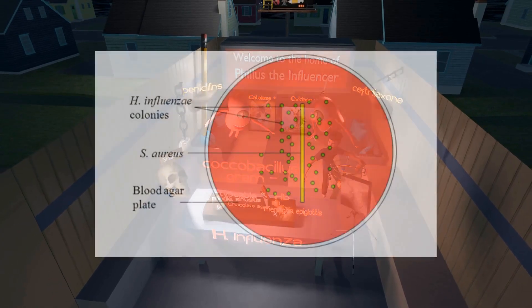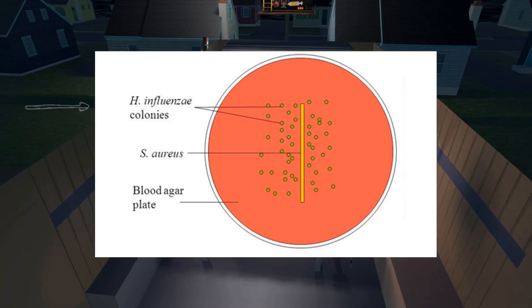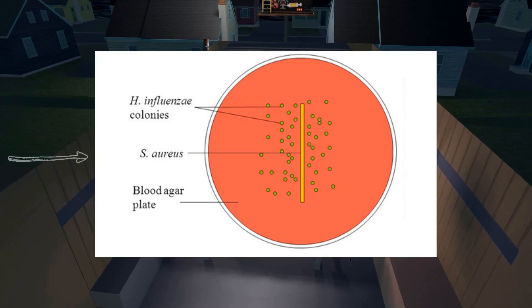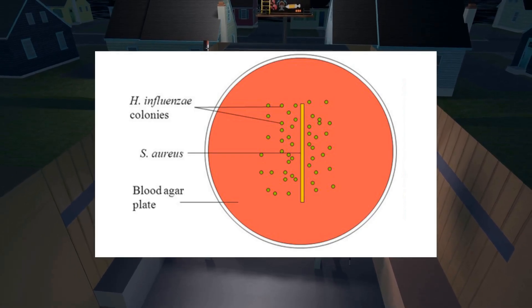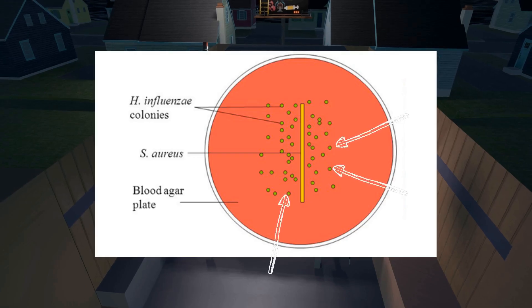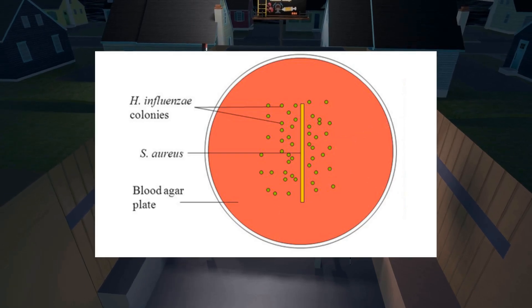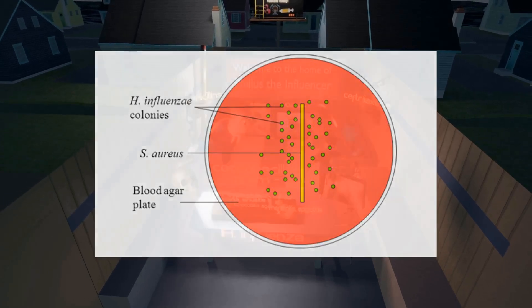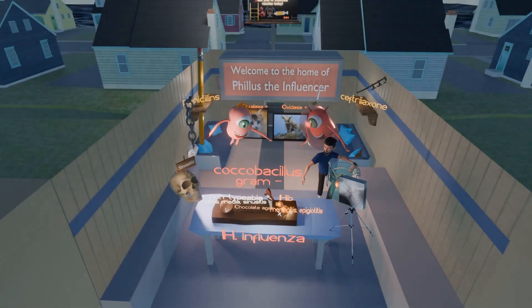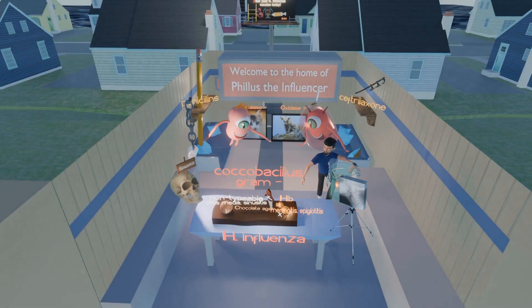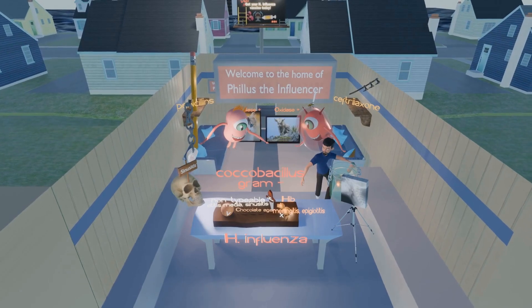Haemophilus influenzae could potentially grow on sheep blood agar by cross-streaking with Staphylococcus aureus. Haemophilus influenzae colonies will grow around the streaks of beta-hemolytic Staph aureus, because these Staph aureus species actively secrete Factor V into the medium and facilitate release of additional Factor X from beta-hemolysis-induced red blood cell lysis.